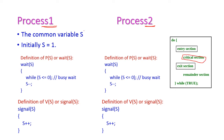The common variable is S, the semaphore value, which is an integer. Initially the value is 1. First, process 1 will execute the wait operation — it comes to the entry section and executes the while condition: while S less than or equal to 0. Since the initial value is 1, the condition is false. Hence it comes out of the while loop and decrements S. S equals S minus 1, so the S value is now 0. The process 1 will enter into the critical section.